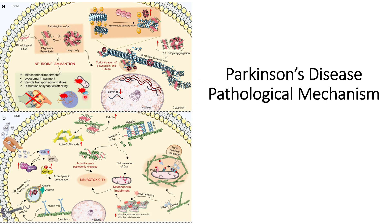Other observations in Parkinson's disease include that lamin B formation in the nucleus decreases, and because of that, nuclear function is affected. Specifically, epigenetic changes may occur in those cells. This concludes the discussion of Panel A.